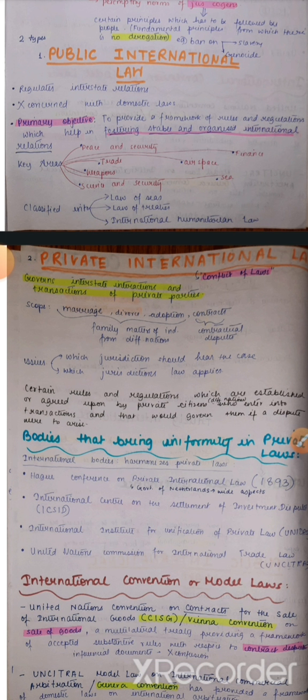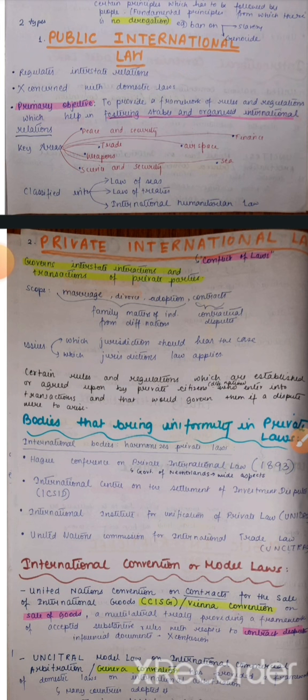Public international law governs interstate interactions. Private international law governs transactions of private parties — two individuals who belong to two different countries. If they sign a contract, there should be a law applicable on them. If one person is from Canada and another from India, then which country's laws will be applicable if a dispute arises? Such things are settled by private international law. It's also called the conflict of laws, because different nations have different rules.